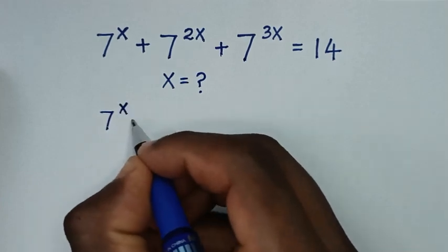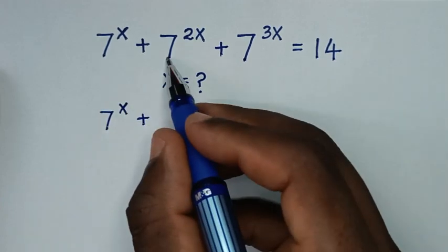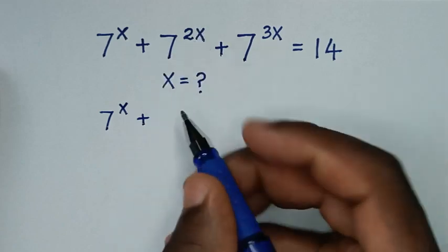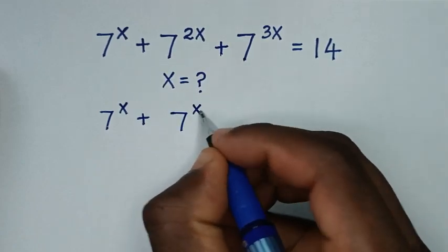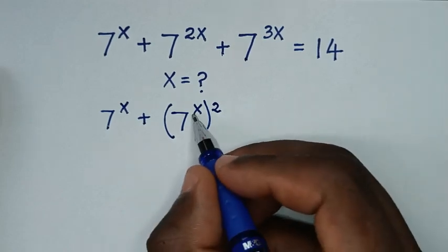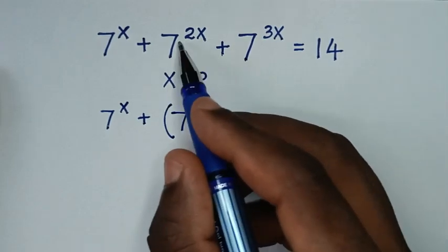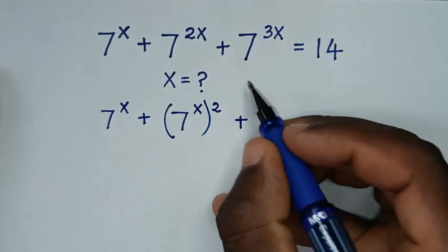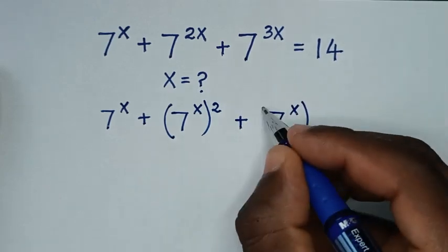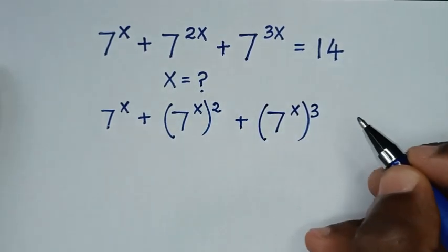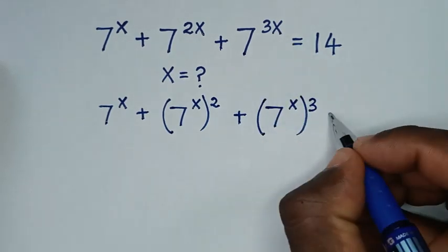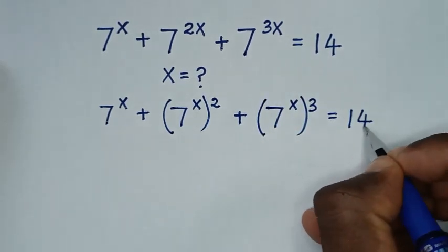We rewrite 7 power 2x as 7 power x, bracket power 2 outside the bracket, because x times 2 gives power 2x. Then 7 power 3x is the same as 7 power x, bracket power 3 outside the bracket, because x times 3 gives power 3x. So the equation becomes 7^x + (7^x)² + (7^x)³ = 14.